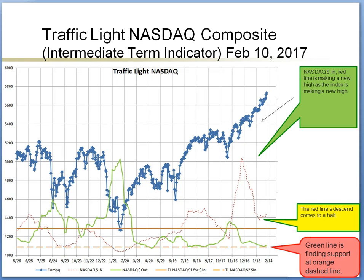Here is a zoomed-in view of Traffic Light NASDAQ with some bullish and bearish observations. On the bullish side: the red line made a new high while the index also made a new high; and it seems the red line is finding support and changing direction, continuing its ascent. On the bearish side, the green line starts to bounce off from the support.